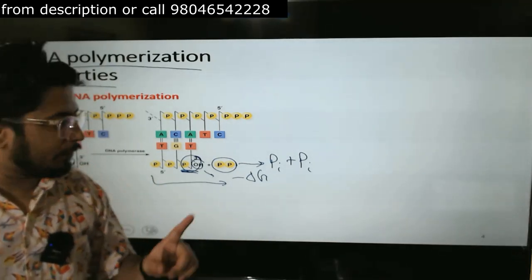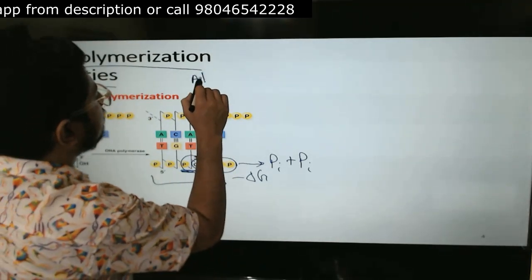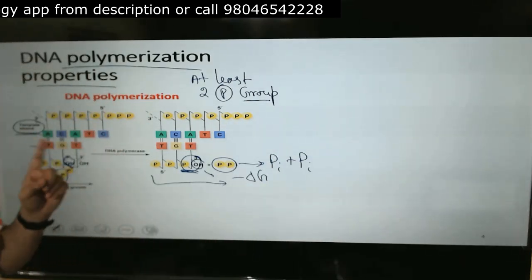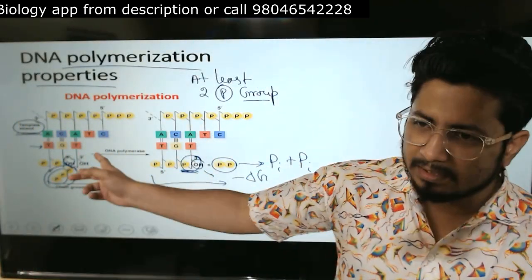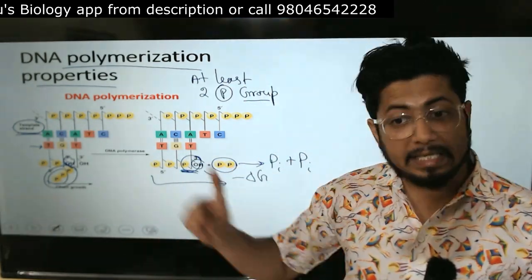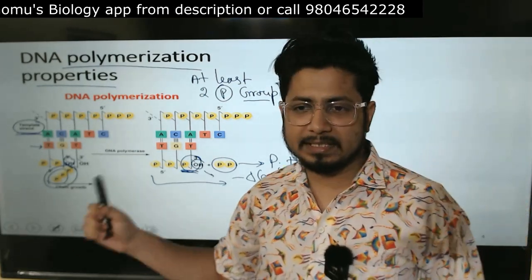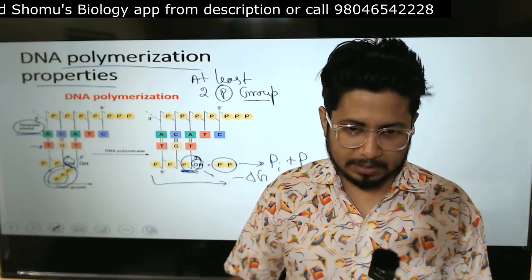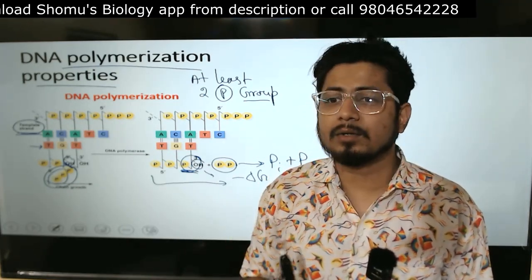For this DNA polymerization event, the polymerase requires at least 2 phosphate groups. If 3 phosphate groups are present, the 3' hydroxyl easily continues the nucleophilic attack. If 2 phosphates are present, the process can still proceed. But if only 1 phosphate is present, the polymerase cannot polymerize. There are situations during the cell cycle where single-phosphate cleavage sites are present — those sites are known as nicks.